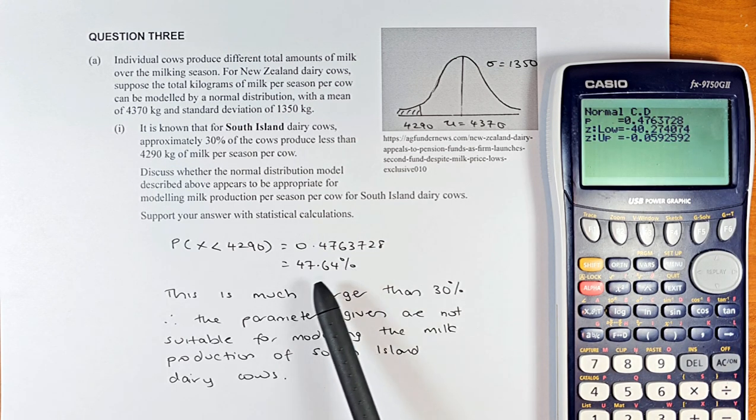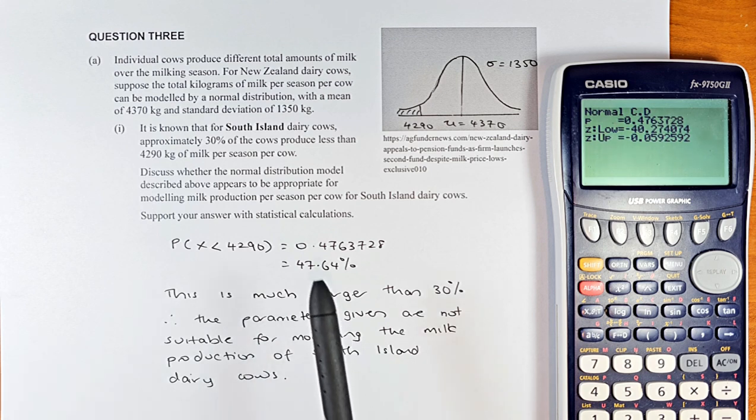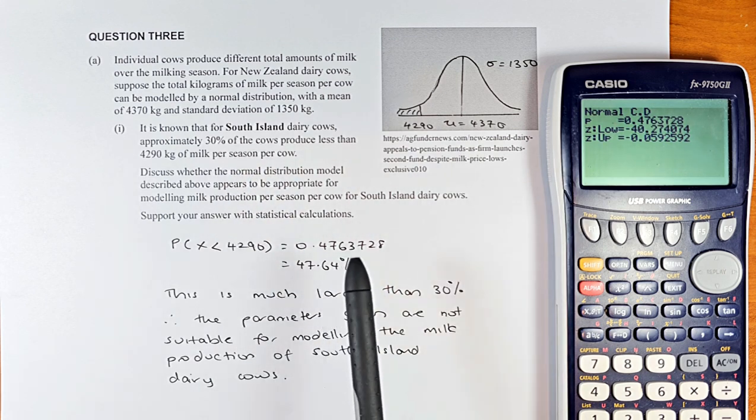If you get that answer, convert to percentages, it's going to be 47.64%. So the answer to this question is, this number is much larger than 30%. So the parameters given are not suitable for modeling the milk production of South Island dairy cows. Because they said that it's 30% but we calculated this model is 47.64%. So these are not suitable to do the modeling for the South Island production of milk for the South Island cow.